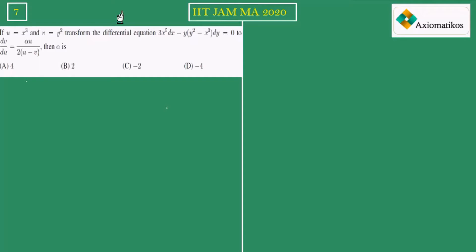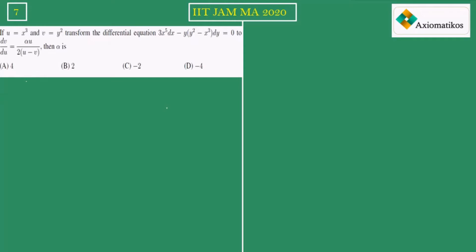What we have: u is equal to x cube and v is equal to y square. These are the two transforms that we have. The question is asking us to transform the differential equation to another form, and find the value of alpha such that dv by du is equal to alpha times u over 2 times of (alpha u minus v). This is a straightforward question.